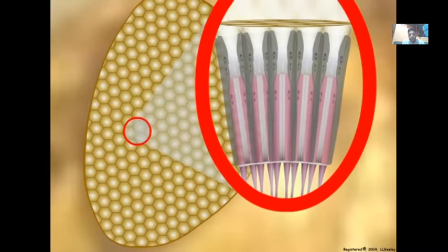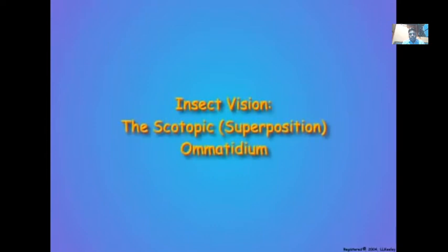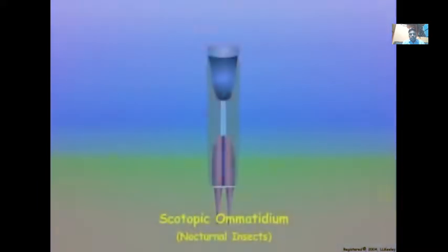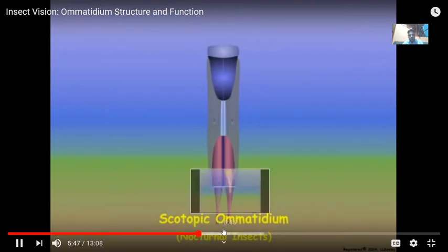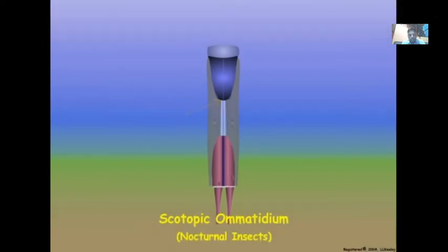Next, we will compare the structure and function of the photopic eye of day-active insect species to the eye of night-active insect species. Ommatidia in the compound eyes of nocturnal insects are referred to as scotopic ommatidia. The structure of scotopic ommatidia is similar to that of photopic ommatidia, except that scotopic ommatidia appear to have an open space, referred to as the clear zone, between the crystalline cone and the retinula cells. The clear zone actually contains transparent crystalline tracts that arise from the retinula cells and extend to the crystalline cone. The crystalline tracts act as light guides.